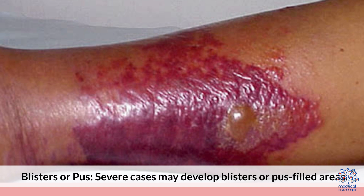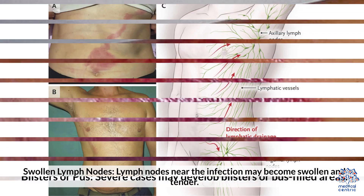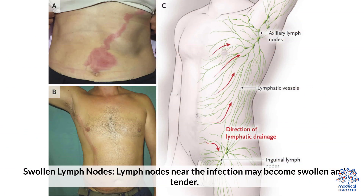Advanced symptoms include blisters or pus-filled areas in severe cases, and swollen lymph nodes near the infection, which may become swollen and tender.